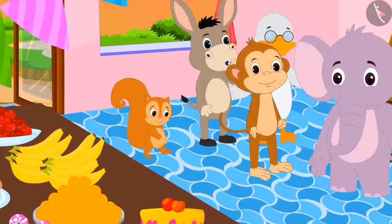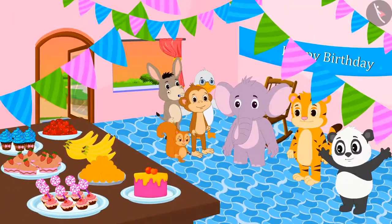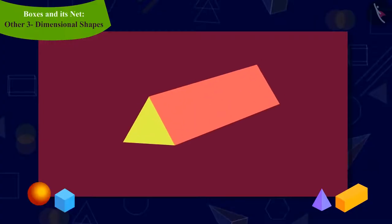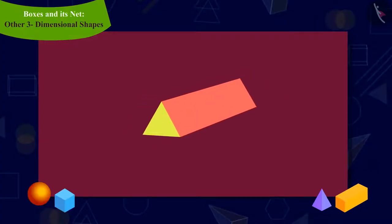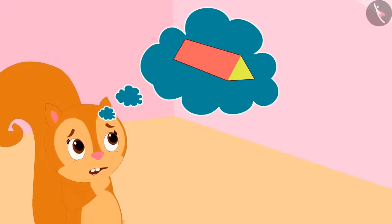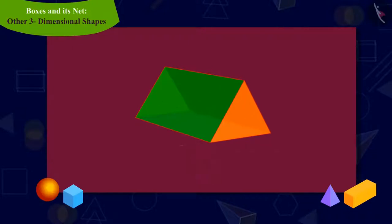When Chanda reached Appu's party, she saw that there were many people there. Chanda noticed that Babban brought a pencil box of this shape for Appu. Chanda is thinking that if she had to make a box of this shape, how would she do this? Kids, can you recognize this shape?